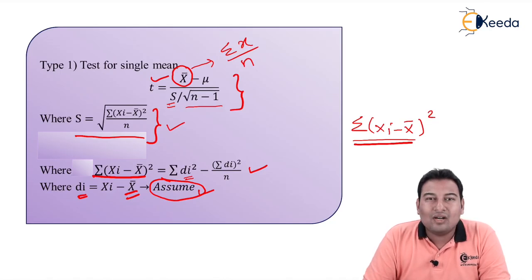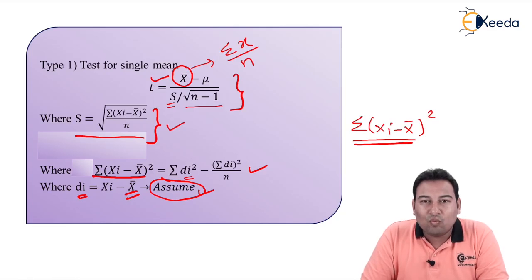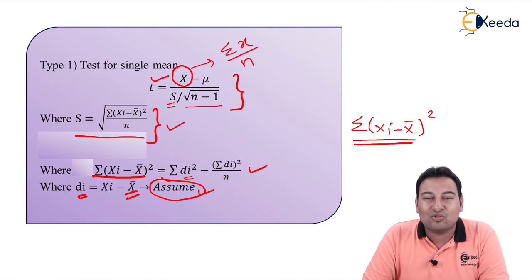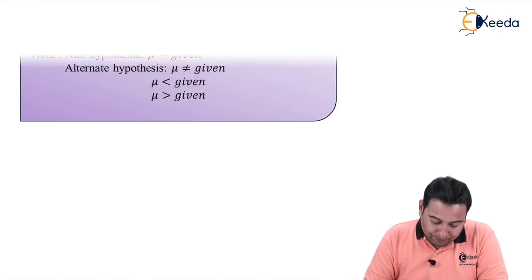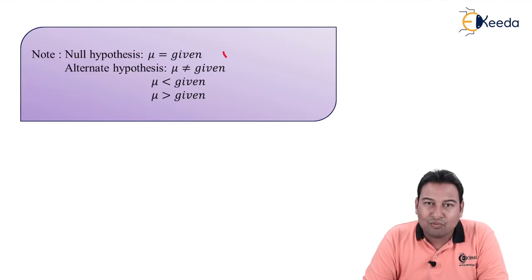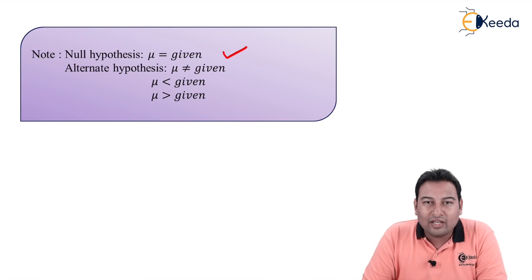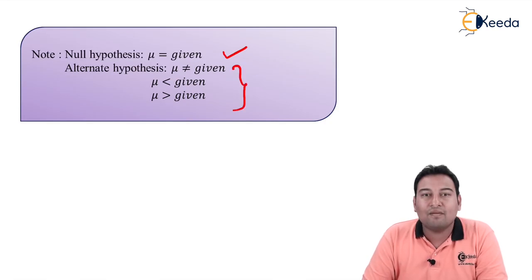Small sample test is also called T test, and large sample test is called Z test. In type 1, the null hypothesis is mu equal to the given value. In the alternate hypothesis, there are three options: not equal to, less than, and greater than — the same as we did in large sample test.